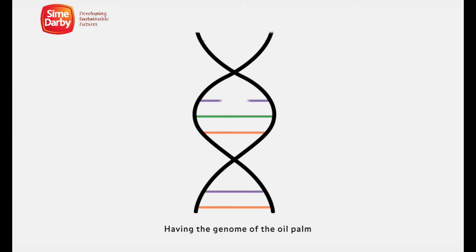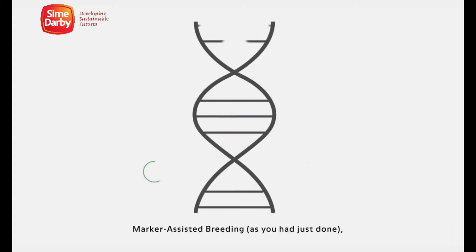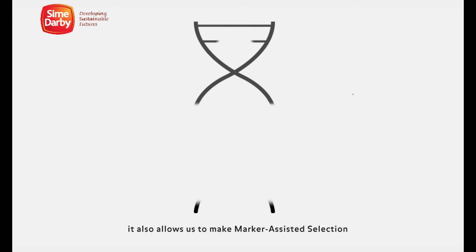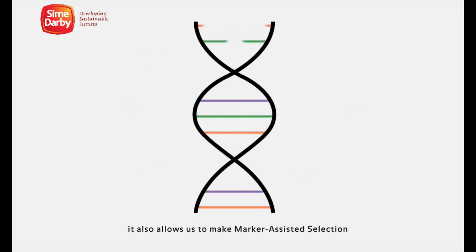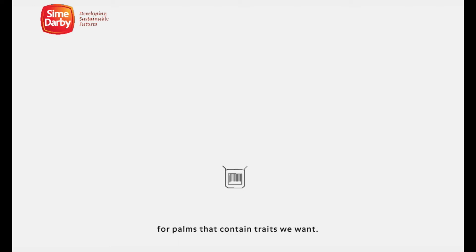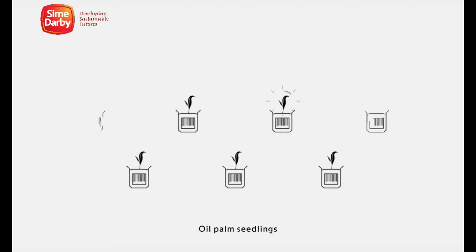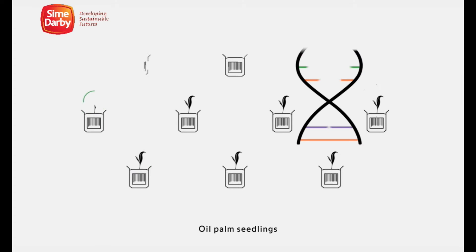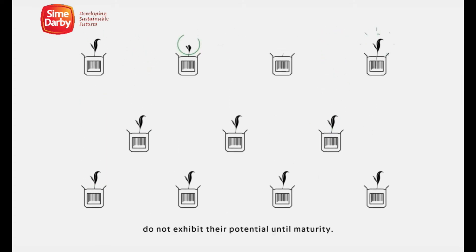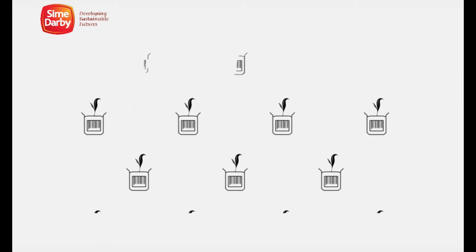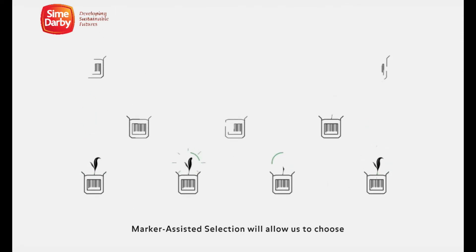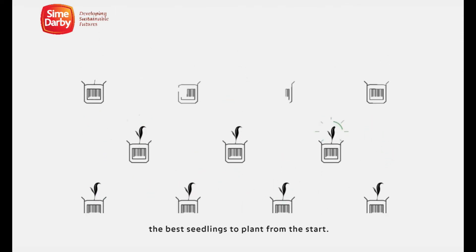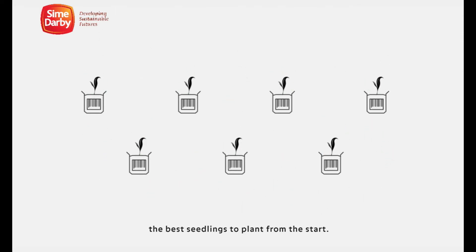Having the genome of the oil palm not only allows us to perform marker-assisted breeding, it also allows us to make marker-assisted selection for palms that contain traits we want. Oil palm seedlings do not exhibit their potential until maturity. Marker-assisted selection will allow us to choose the best seedlings to plant from the start.